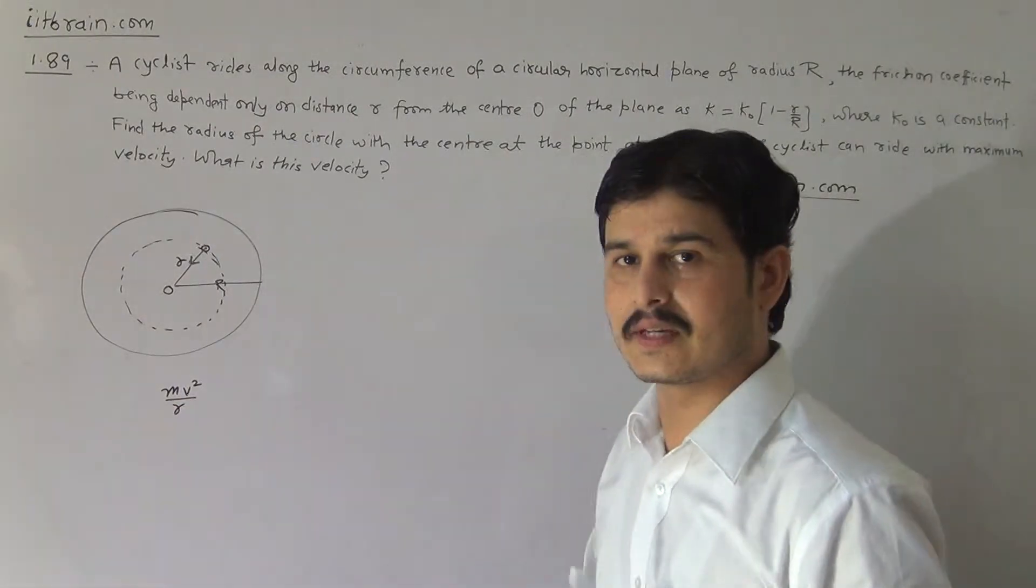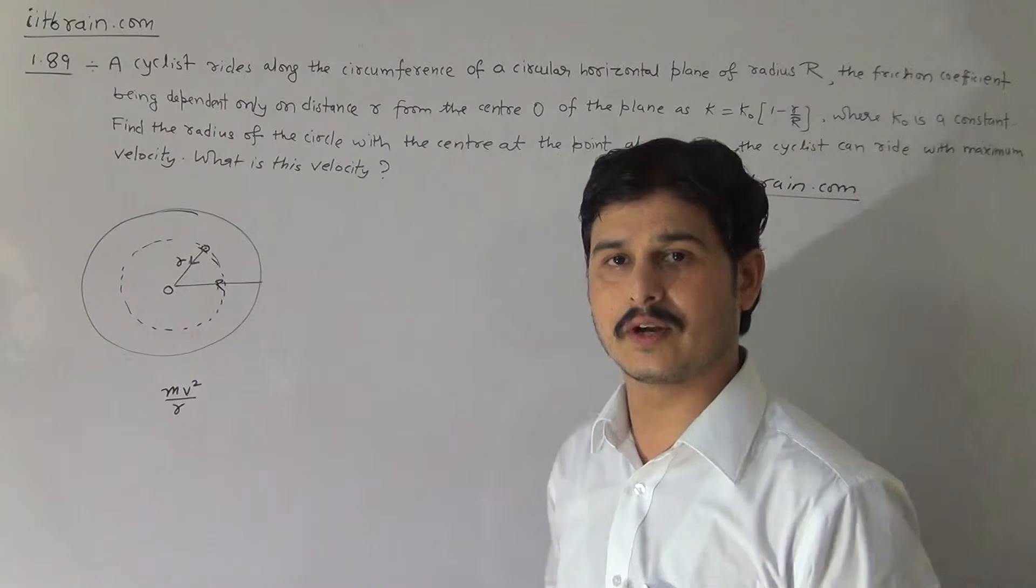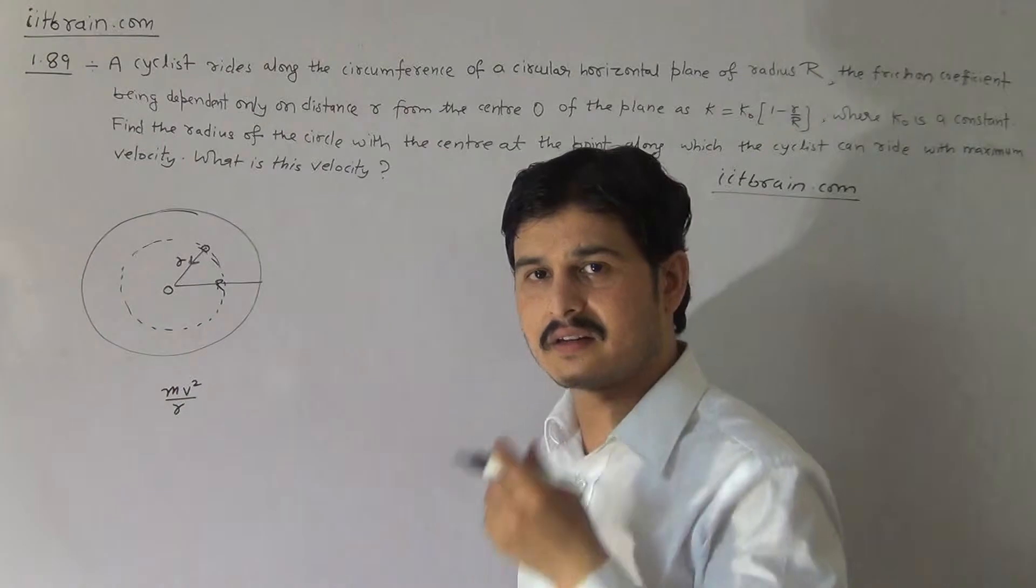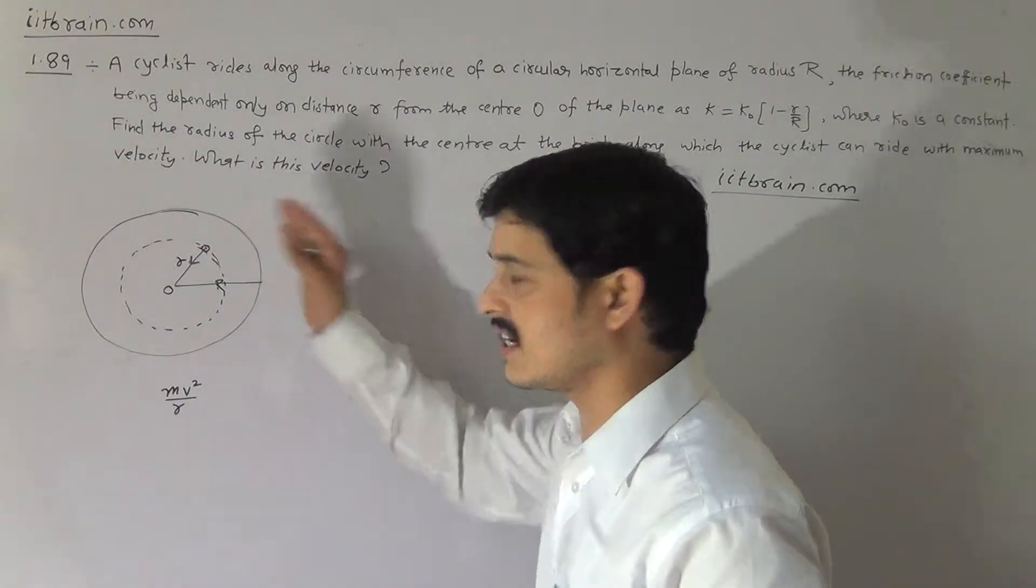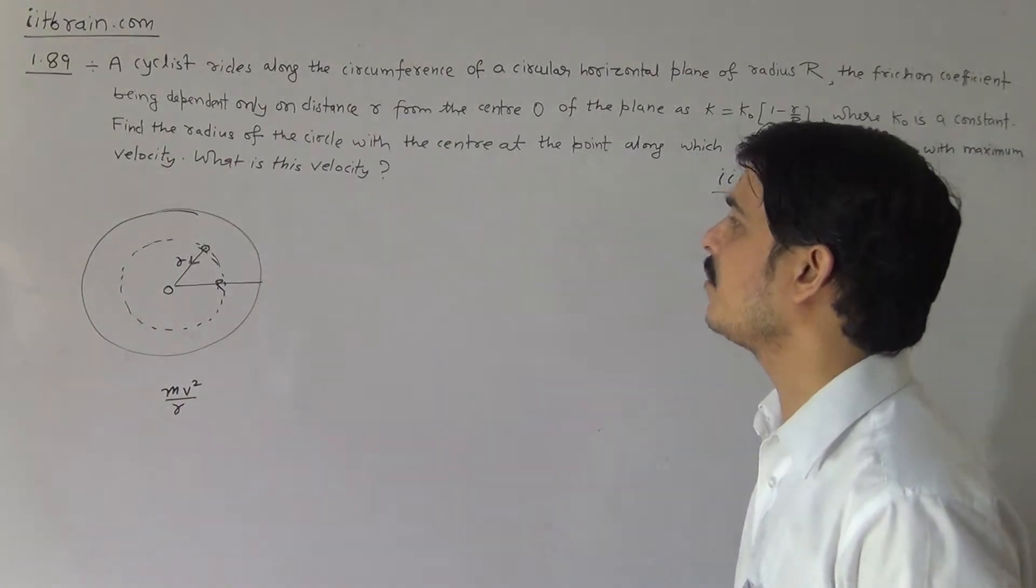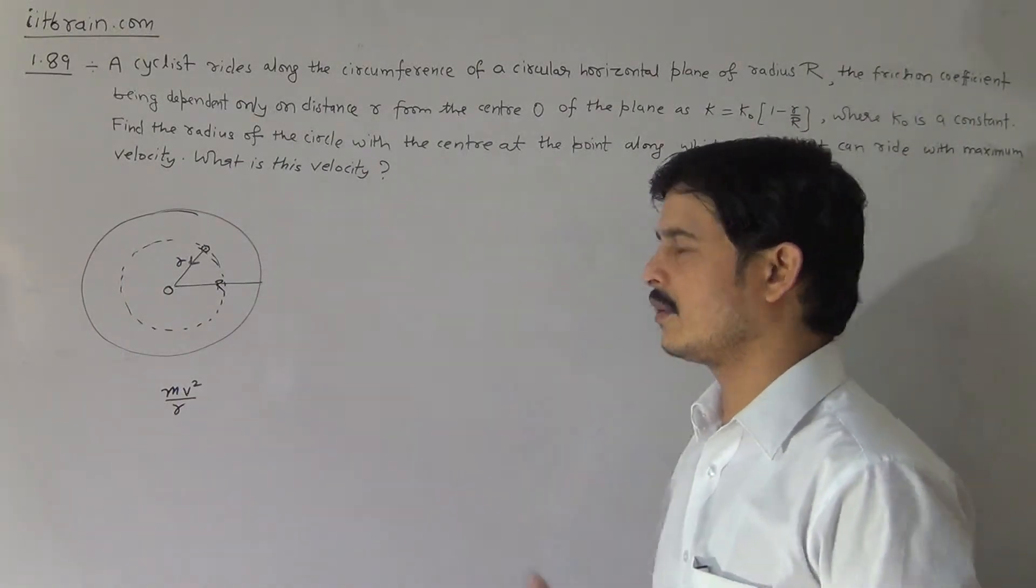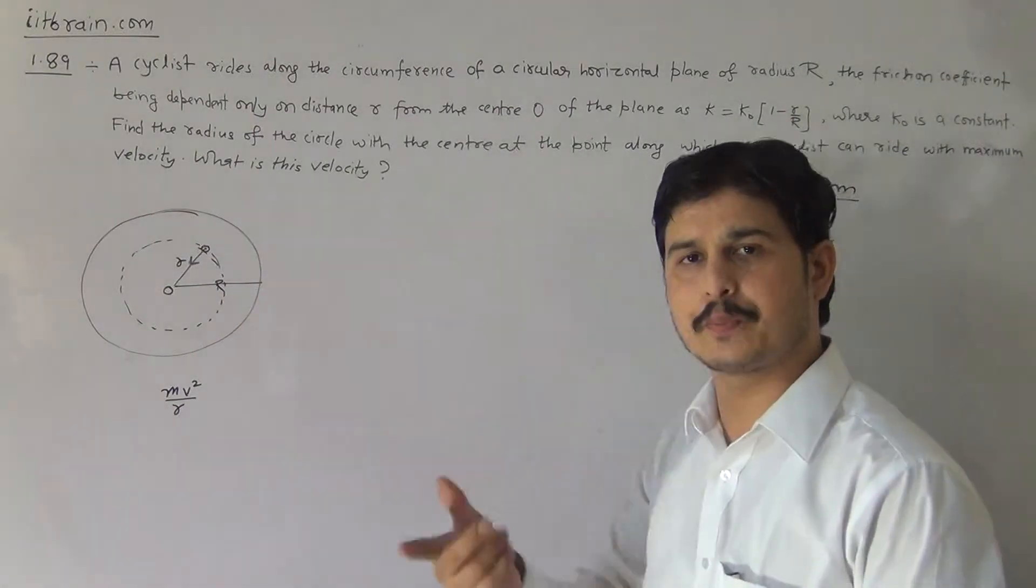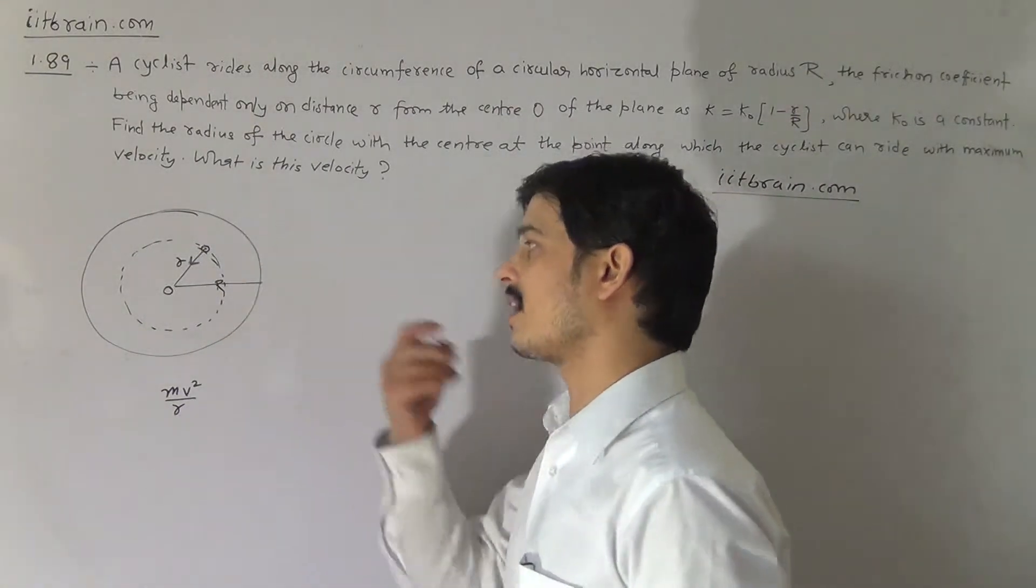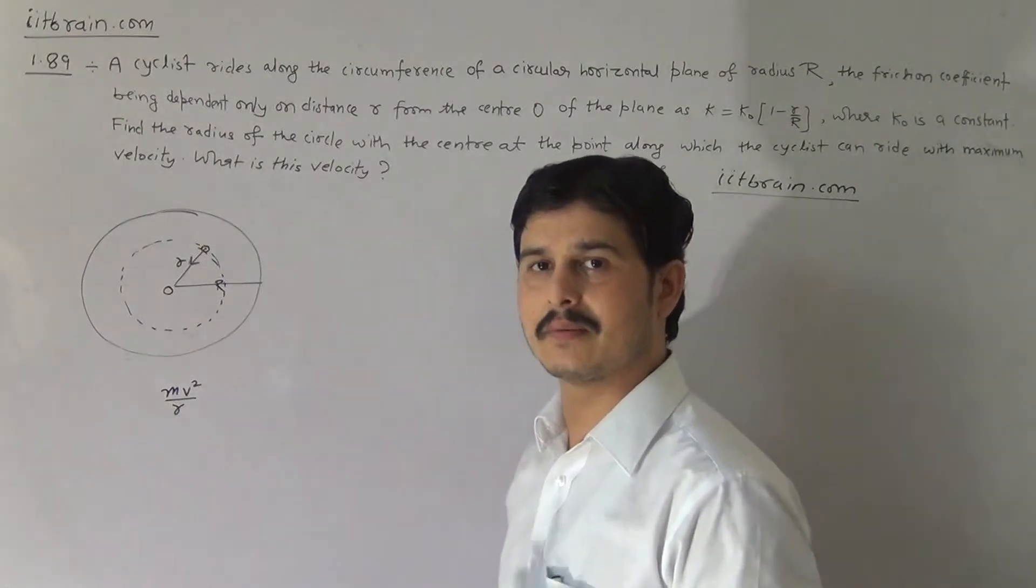So there is a need for centripetal acceleration as seen from the ground frame. If you ask the ground observer where the particle is revolving, centripetal acceleration is needed but there is no tangential acceleration. In this problem, we have to find the maximum velocity, which means we can consider that the cyclist has constant speed, so we have to calculate the value of the maximum speed.